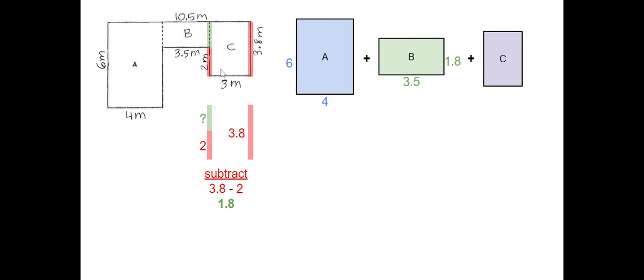If this is 3.8, we know this is also 3.8. So from here to here is 2 — 2 plus what equals 3.8? Just subtract that and you'll find the missing piece. Label your drawing. Now for C, it's a little bit simpler: this is 3 and this is 3.8, so they were both given to you. As always, we want to make sure we write our formula beneath each shape. A is a rectangle, so base times height, which was 4 times 6, and that's 24.